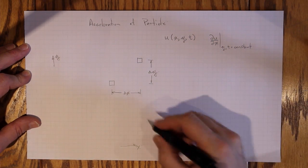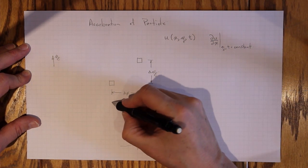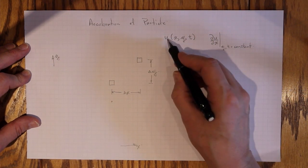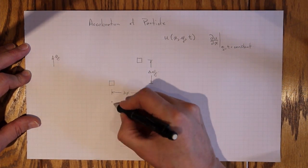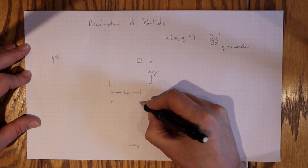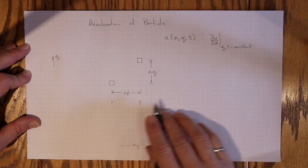So at any instant in time, that's the difference between the velocity in the x direction, the u component of velocity at one location, and the u component of velocity at another location delta x away.